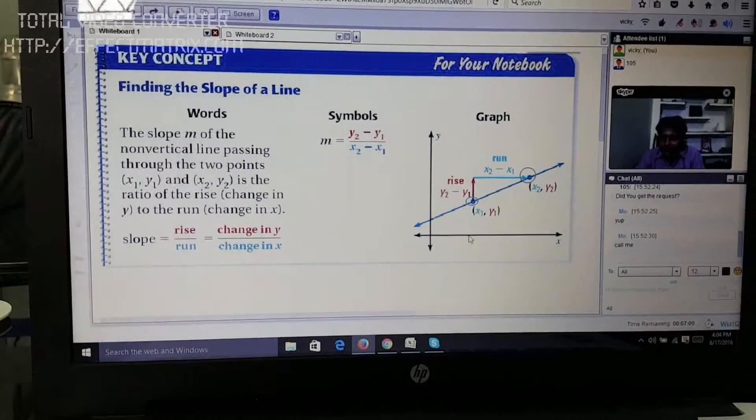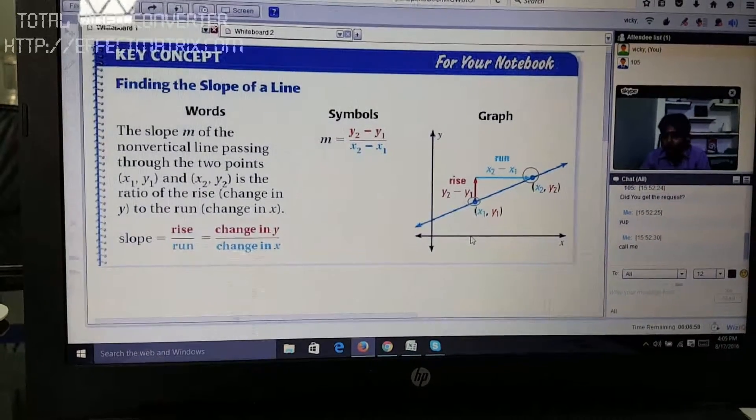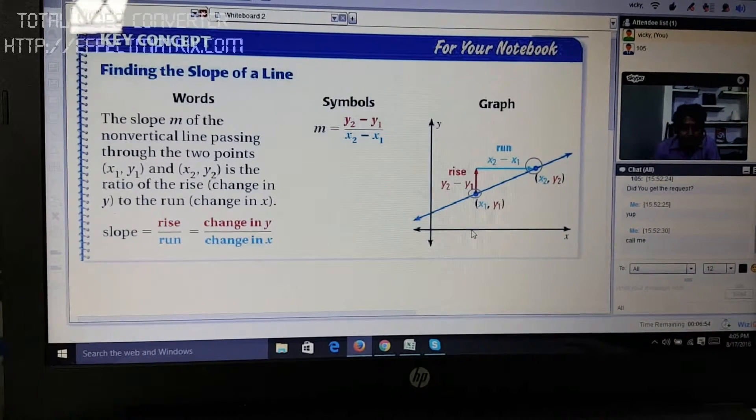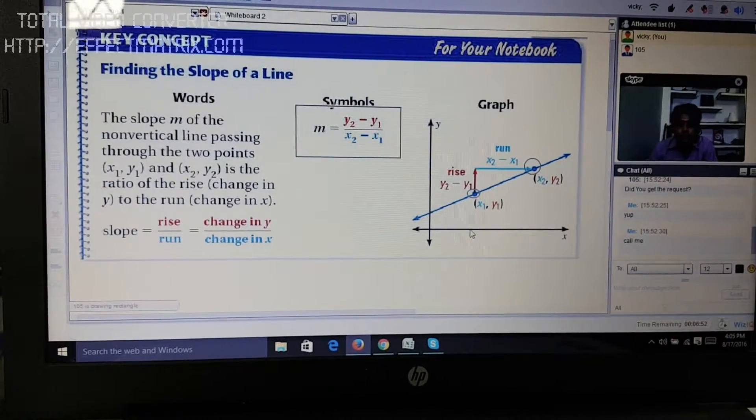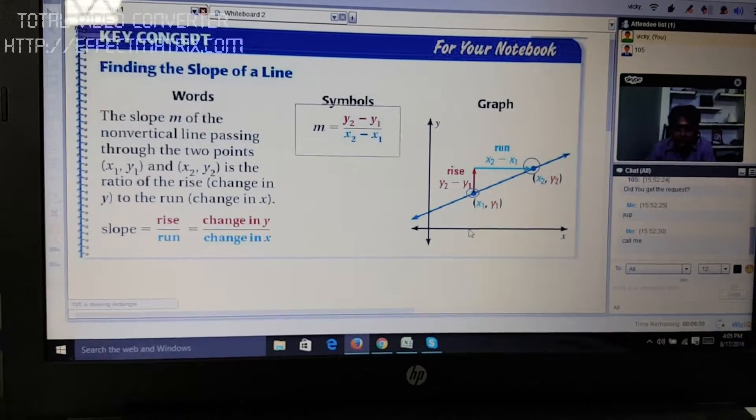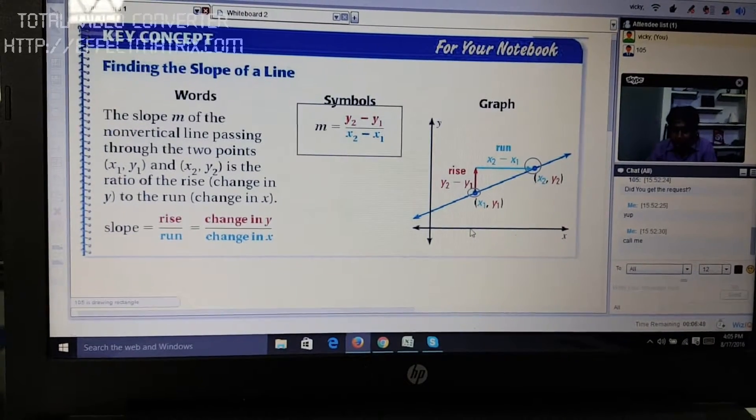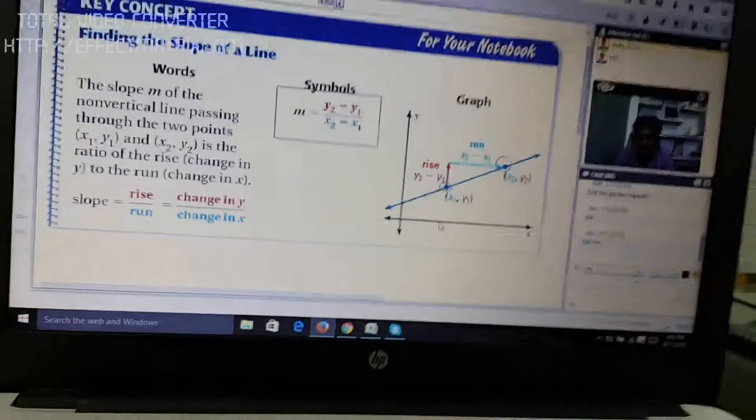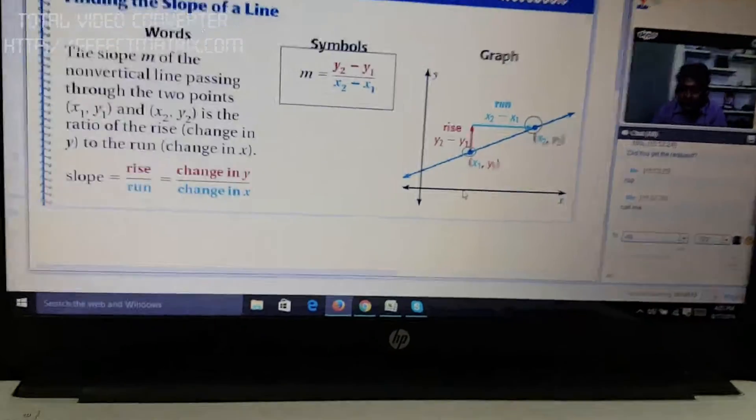Now, we can obtain its slope very easily whenever we are given two points lying on a straight line. What's the formula? The formula is just simple: m is equal to y2 minus y1 over x2 minus x1. m is the symbol for representing the slope of any straight line.